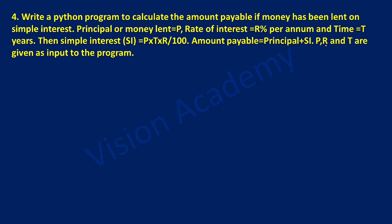So here P, R, T are the variables and values for these are to be taken from the user. Let us write the program. P is equal to — here I am going to take the data type as float. Floating point type of data is a real number, and inside the round bracket I am going to write input and ask the user to enter the principal amount.